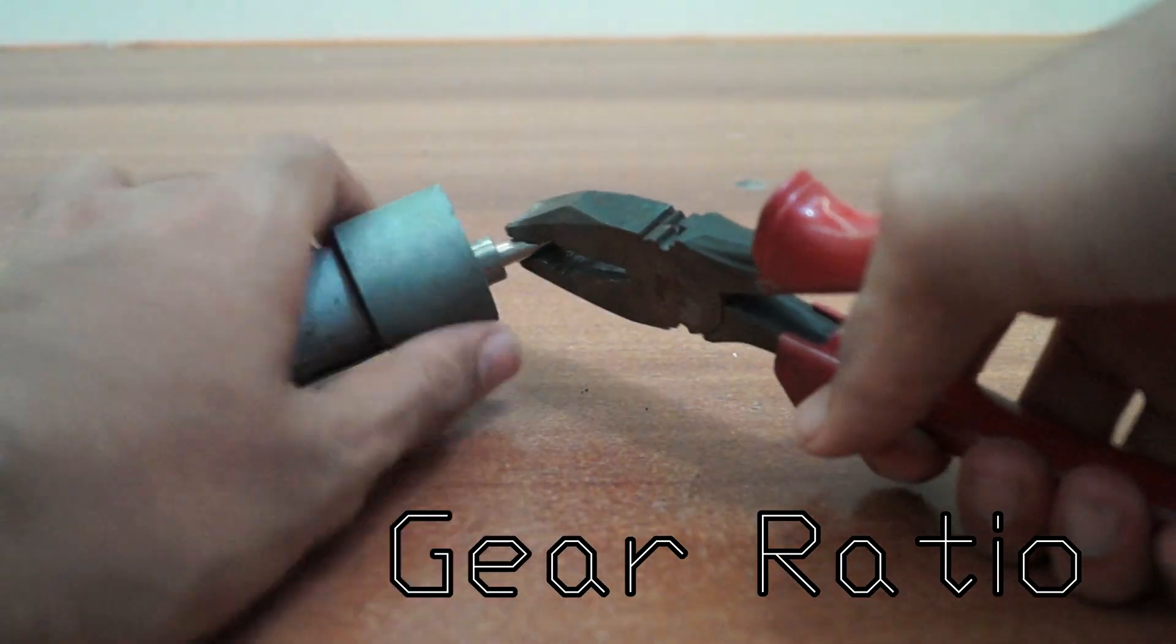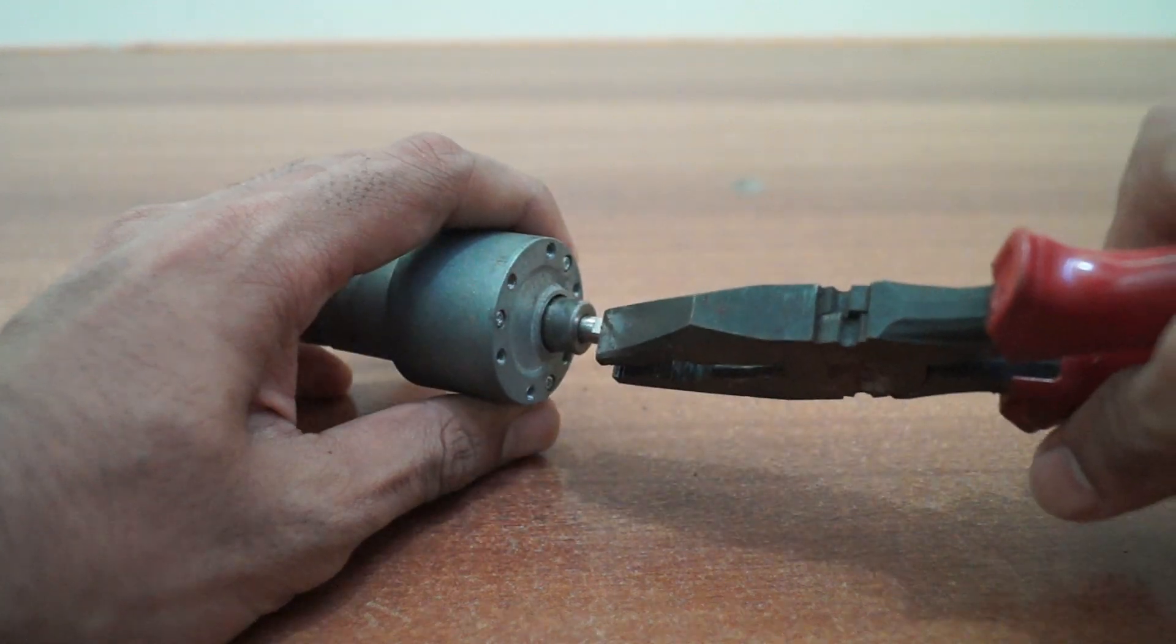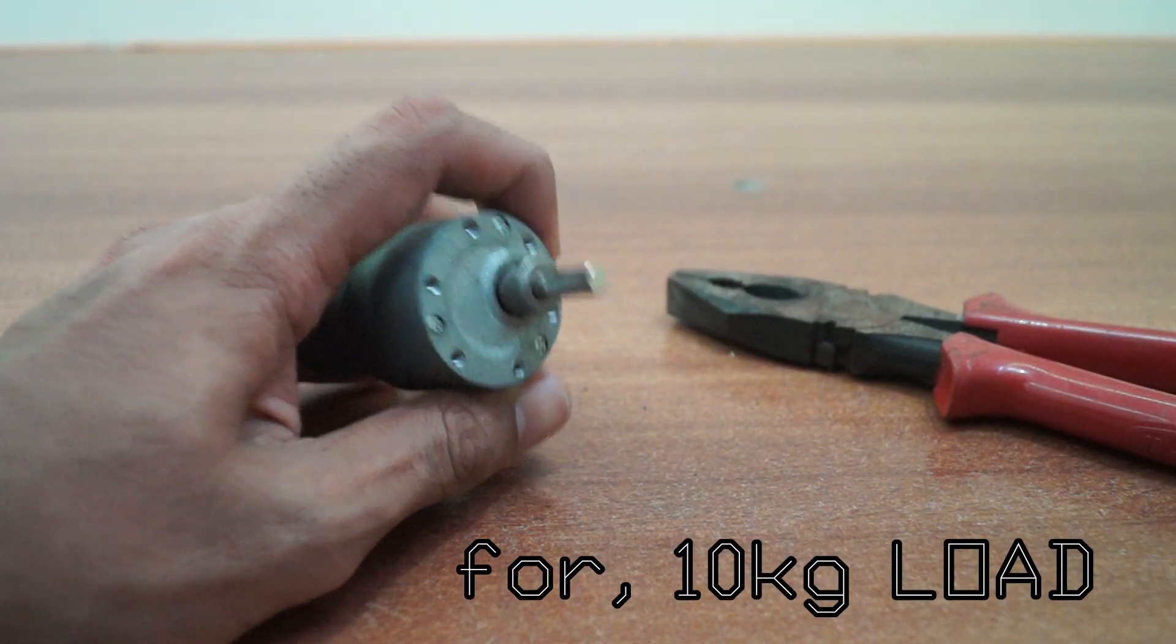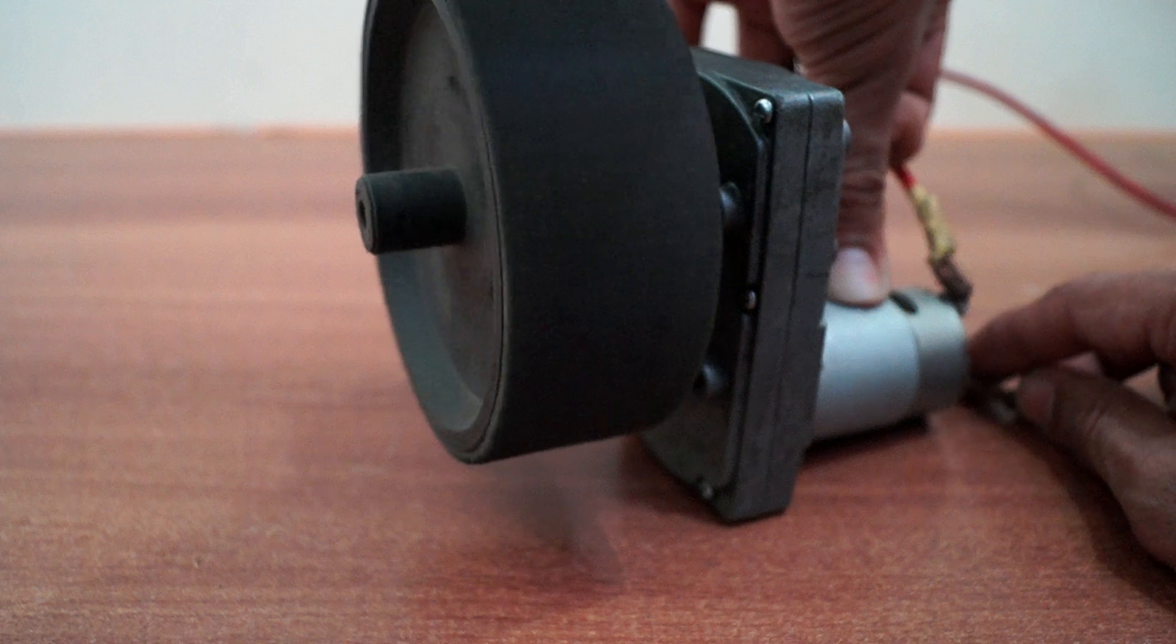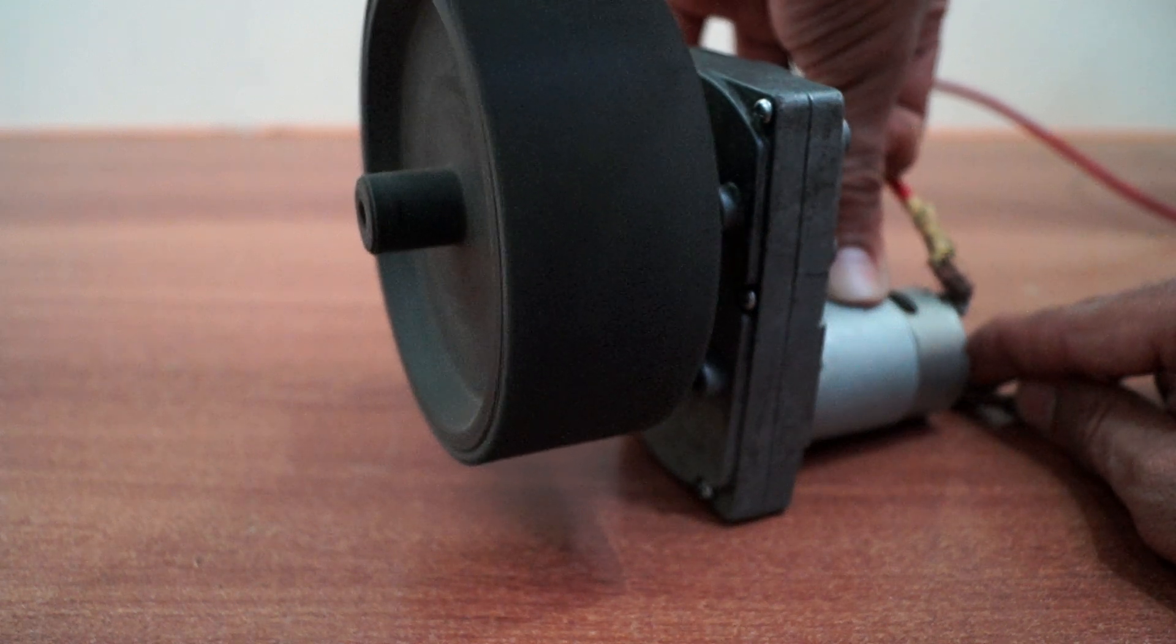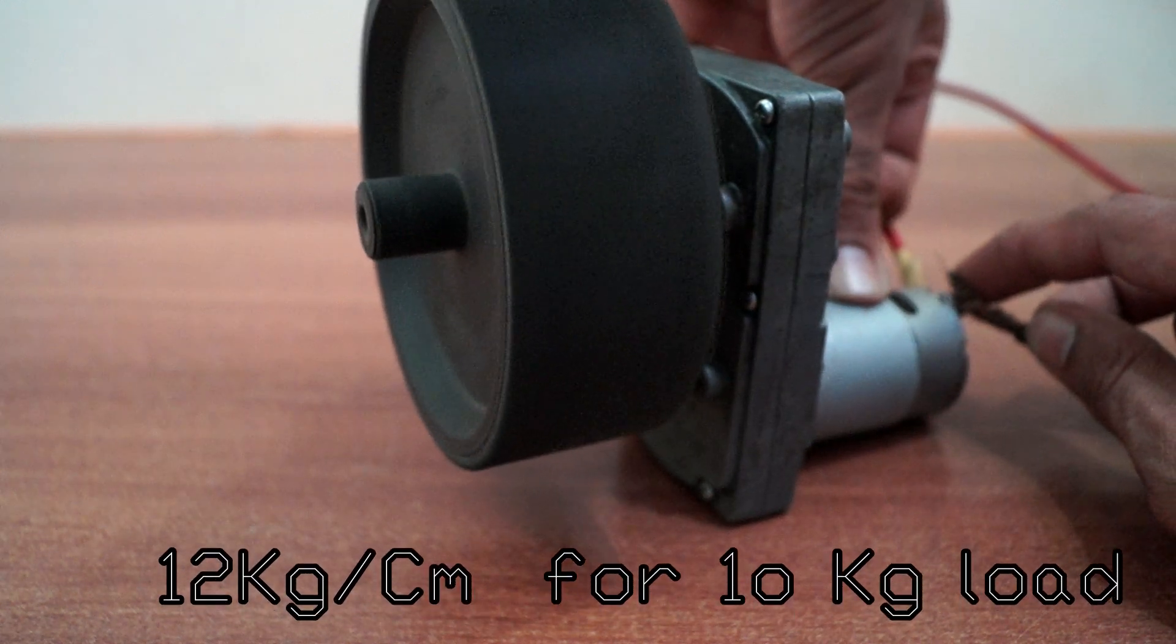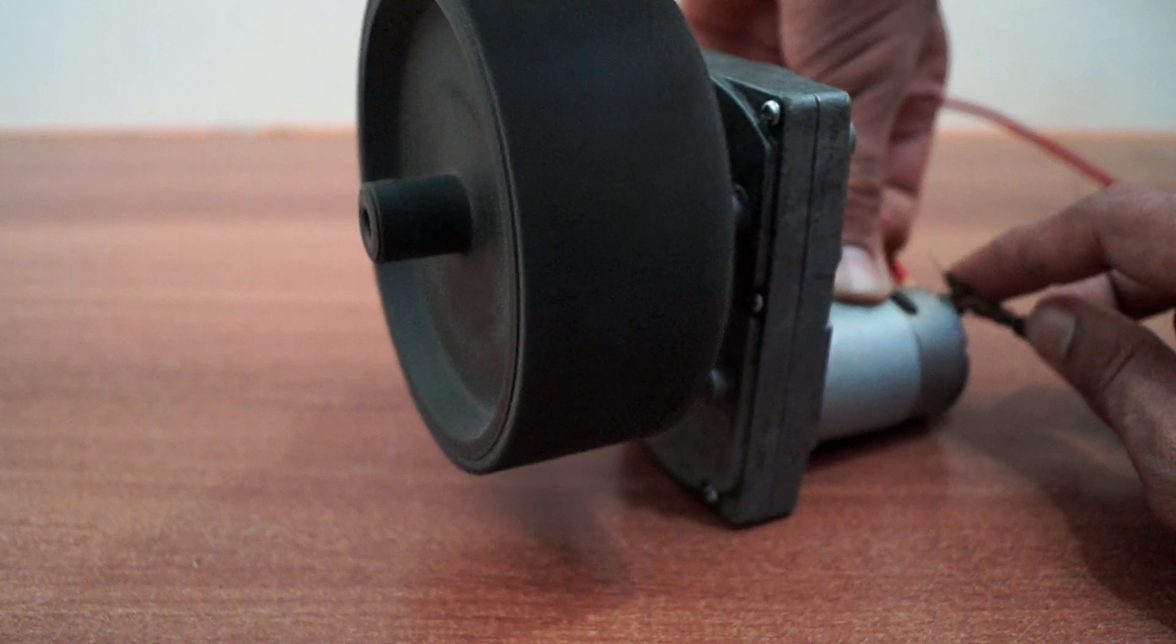For higher weights, higher torque motor should be selected. To improve torque, gearboxes can be used. Depending upon the gear ratio gear reduction, the torque is obtained. Suppose you have 10 kilograms of payload, select a motor for around 10 kilograms per centimeter torque plus some safety factor, let's say 2 kilograms per centimeter. So let's select a motor for around 12 kilograms of torque.